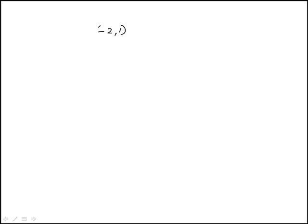We're given two sets of points here, minus 2, 1, and 1, 2, and we need to find the equation of a line that passes through these two points.